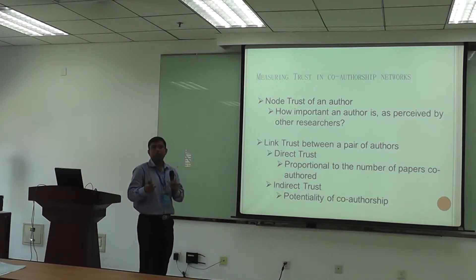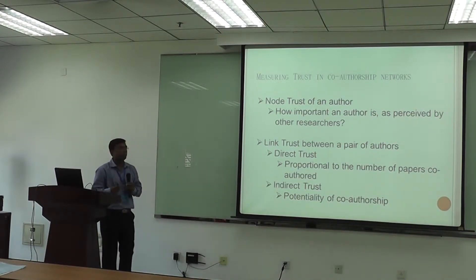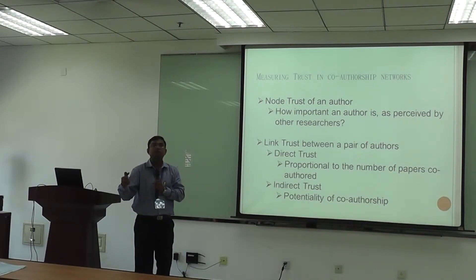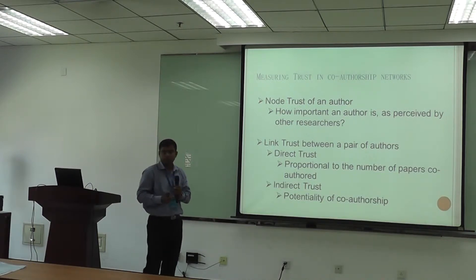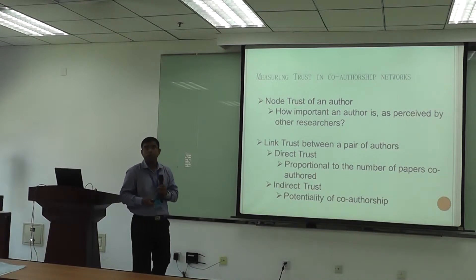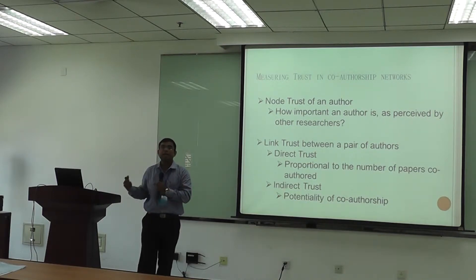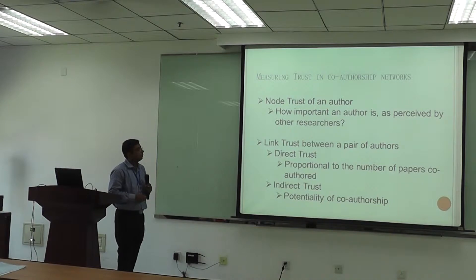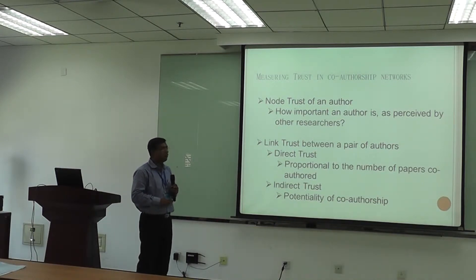We also introduce the concept of a personalized notion of trust. For example, if researcher A works with researcher B and has produced several publications, there is obviously mutual trust among them, since they are directing each other when producing a high number of publications. If A and B have produced a much higher number of publications compared to A and C, the strength of the relation between A and B is much higher. We define this concept as link trust. If two authors have directly collaborated, we call it direct trust, proportional to the number of co-authored papers.